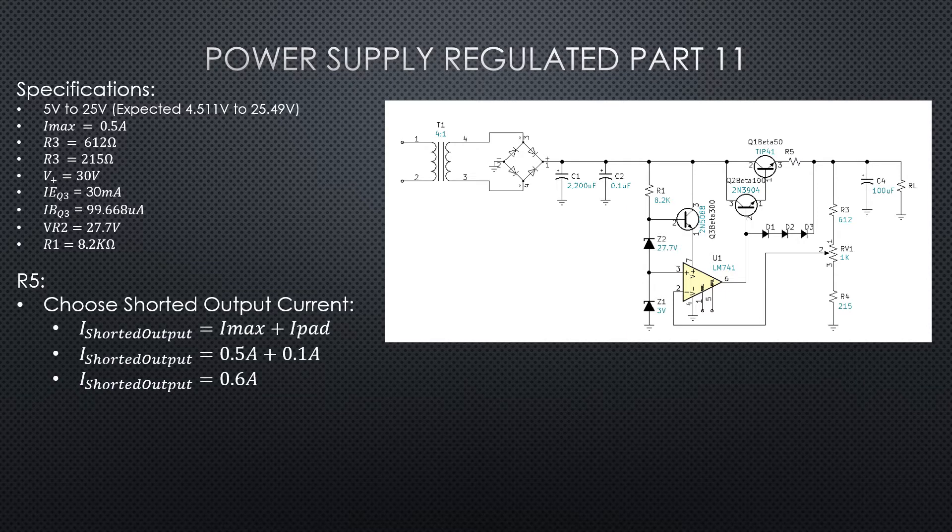So when we're designing the fixed current regulation for this circuit, we want to make sure that we can at least get to whatever our desired max current was. Up until now we've defined our Imax as 0.5 amps, and the assumption was that this circuit would run at that current all day long. So we don't want to limit at 0.5 amps, we want to provide a little bit of padding or cushion for our regulation circuit so that we can run where we want to run.